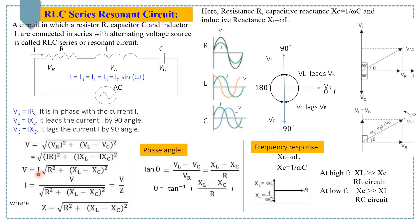Dividing the voltage by the current, we get I equals V over Z, where Z is the impedance. Z equals the square root of R squared plus (XL minus XC) squared. Z is the total opposition offered to the flow of current by the RLC circuit, and it is called the impedance of the circuit.